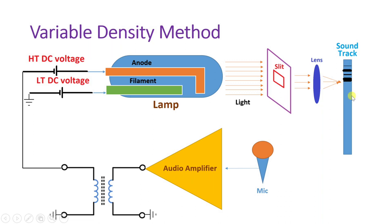By changing the density of light, we record sound on the film — this is the variable density method of optical recording.